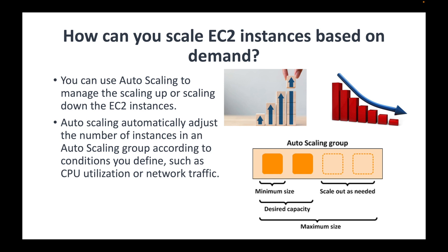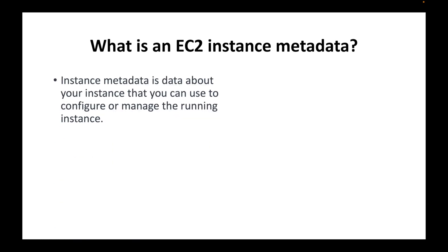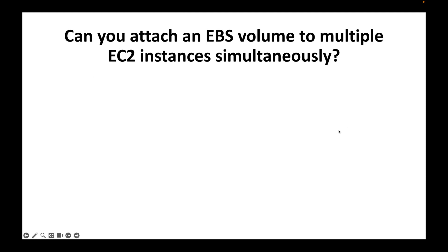The next question is: what is EC2 instance metadata? EC2 instance metadata is simply information about the EC2 instance you are running, and we can use this to configure and manage the instance. It includes information like the VPC, subnet, public IP, private IP, and security group details. This information can be accessed through a unique URL — you make an HTTP request from within the EC2 instance to retrieve that metadata.